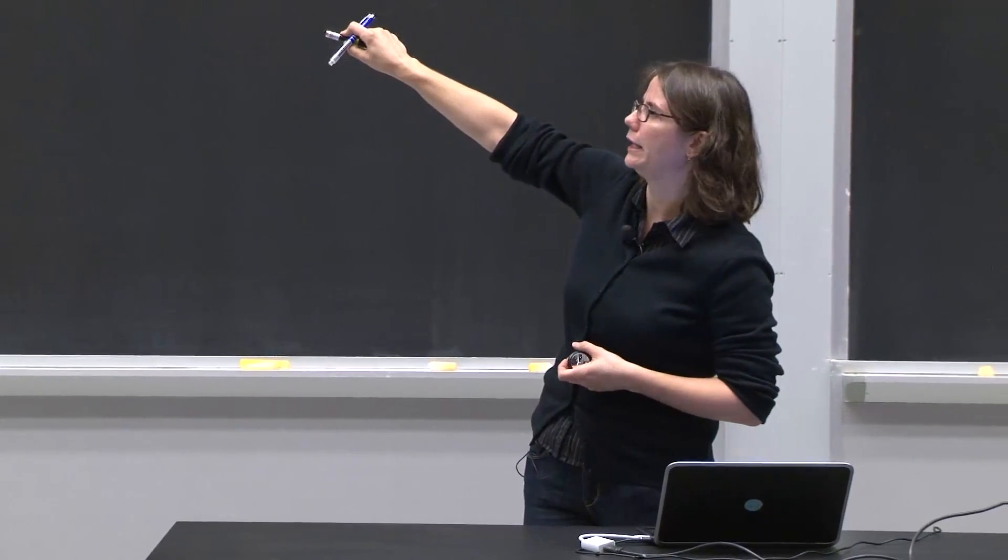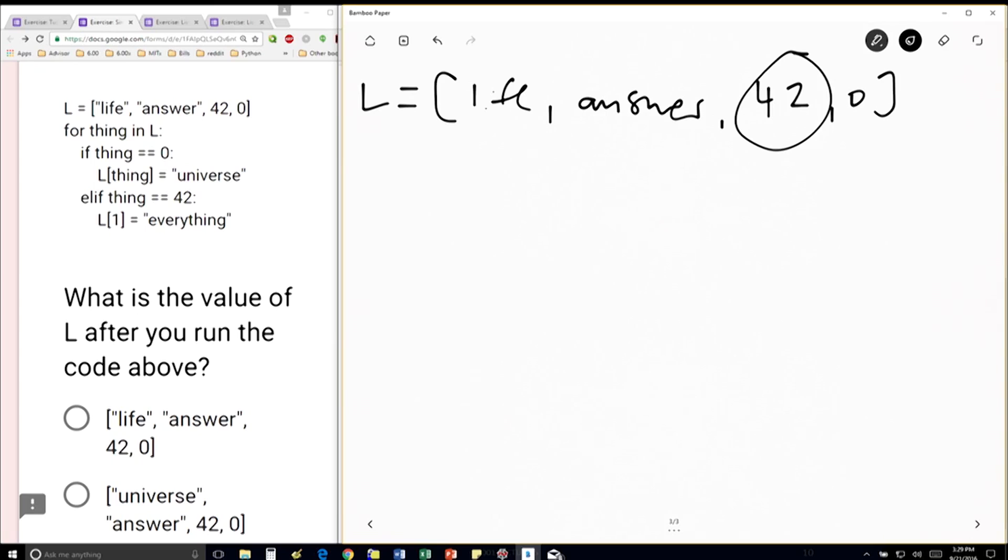Here I'm writing a loop that iterates over every element directly in L. So originally, thing is going to be the string life. Then thing is going to be the string answer. Then thing is going to be the number 42. And so what am I doing inside the loop as I'm iterating? Well, if thing is equal to 0, then I'm going to do this. And otherwise, I'm going to do this.